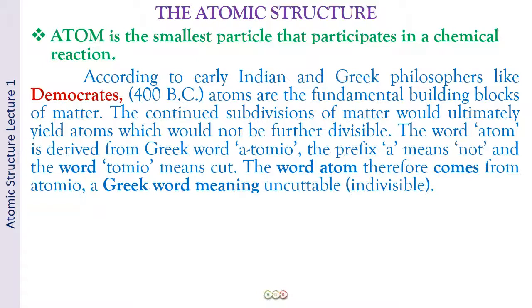And now how did this word atom come into being? So according to history, there were many Greek philosophers, Indian philosophers in the time of probably 400 BC. The Greek philosopher, one of them was Democritus, who was very famous. And they all thought that atoms are the fundamental building blocks of matter. And the school of thought was that if you keep on subdividing matter, ultimately we would reach up to a point where matter would not be further divisible. And that point where the matter cannot be further divided, they called that smallest particle of matter to be atom.